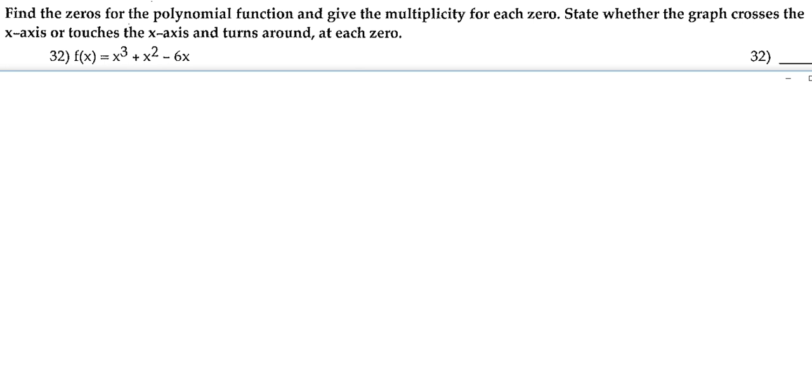For number 32, we're going to find the zeros for the polynomial function and give the multiplicity for each zero. Then we're going to state whether the graph crosses the x-axis or touches the x-axis and turns around at each zero.